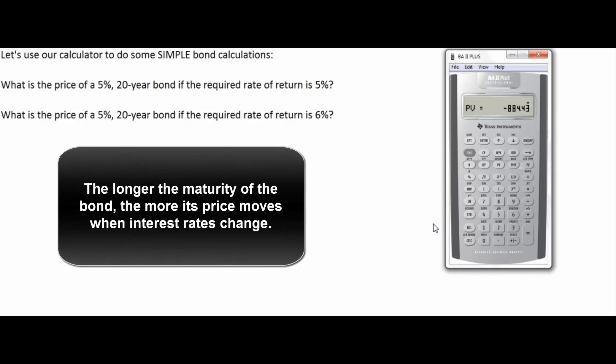If this were a one-year bond it wouldn't have gone down very much, because the effect of the interest rate differential between the required rate and the contract rate would only exist for a short period of time. So the longer the bond is outstanding, the more susceptible it is to price changes.